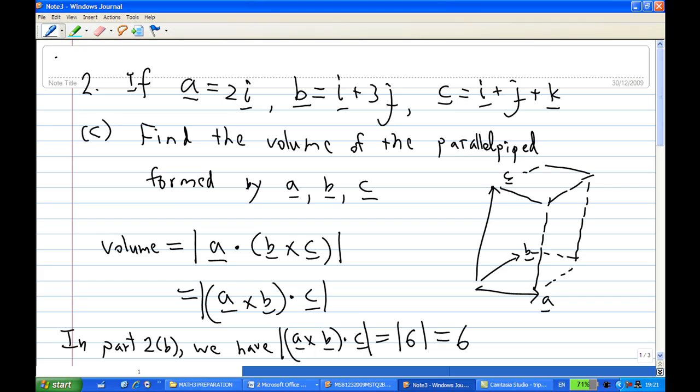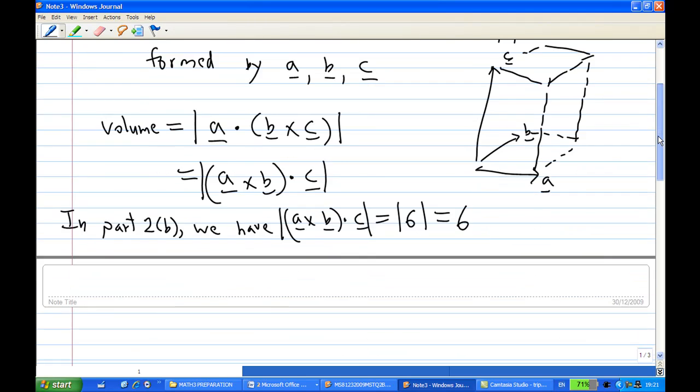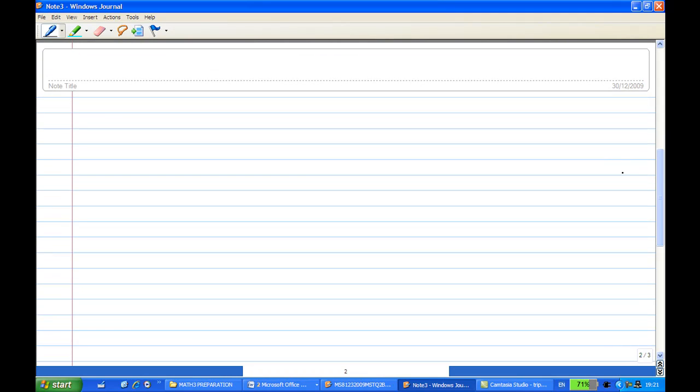So for this particular question, what is the key takeaway? The key takeaway is if you have three vectors which form a parallelepiped here, a, b, and c, forming adjacent sides of the parallelepiped, which means you can form a 3D vehicle like this,